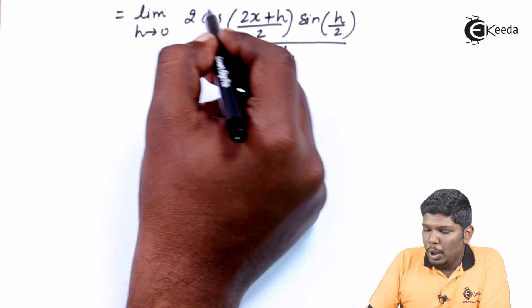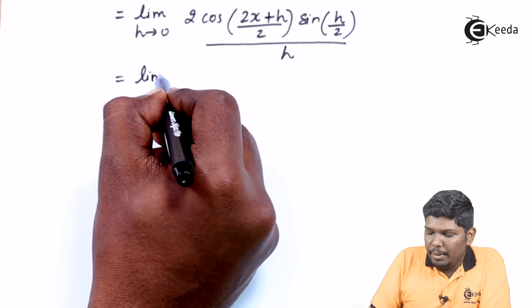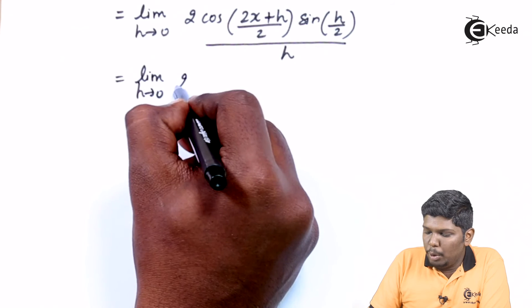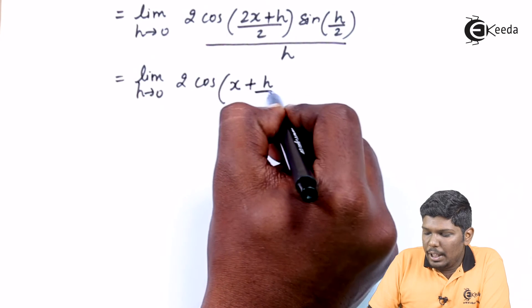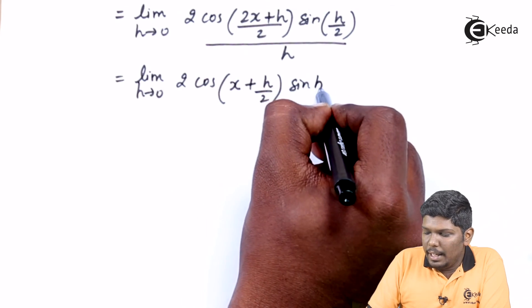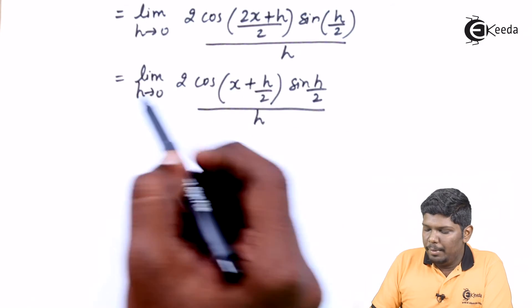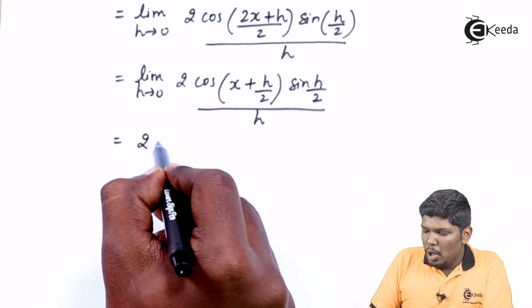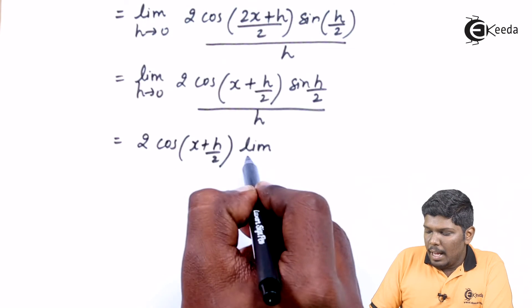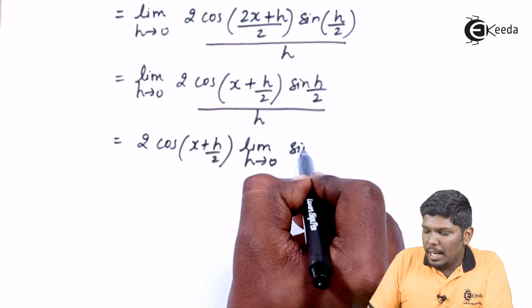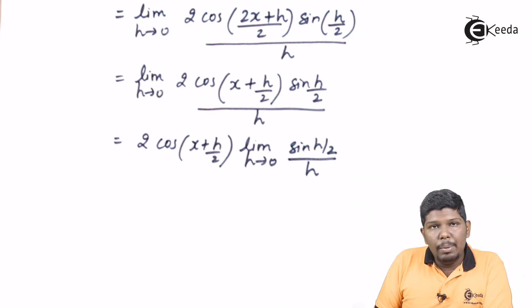Now to solve this limit, 2 is a constant part and will be divided to both functions. So: limit h tending to 0, 2 cos of X plus H upon 2, into sine H upon 2, divided by H. We then separate the limit h tending to 0 for the sine H upon 2 upon H part.